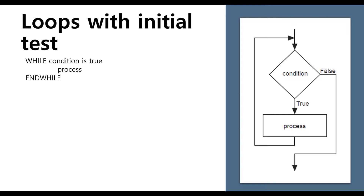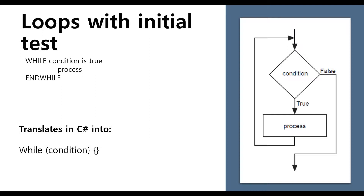How does this translate to C#? In C# it's fairly easy. We have the while keyword, then in parentheses we define the condition, and then we have a code block delimited by curly braces. Our entire logic that we want to execute in this loop will run inside those curly braces.